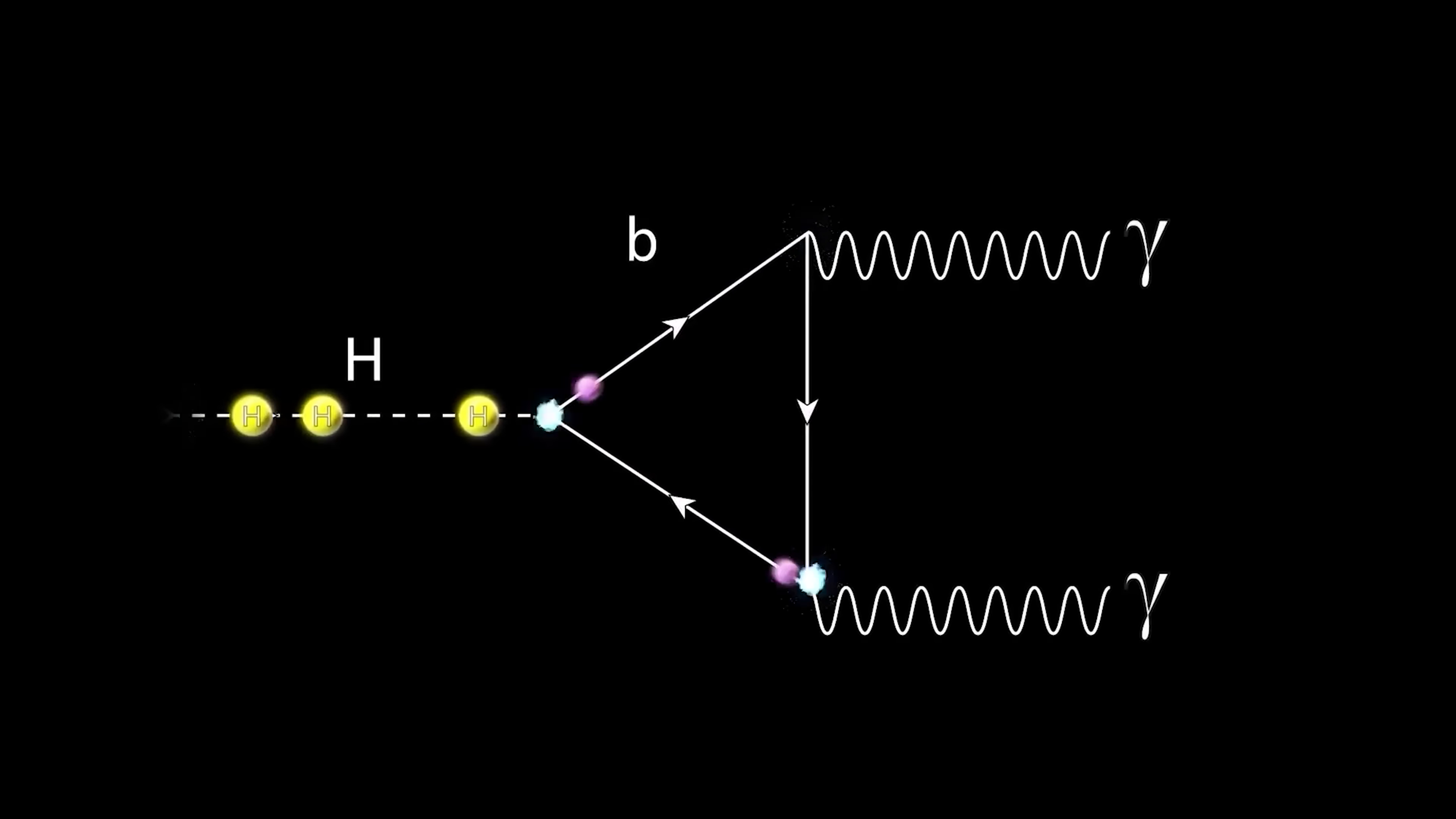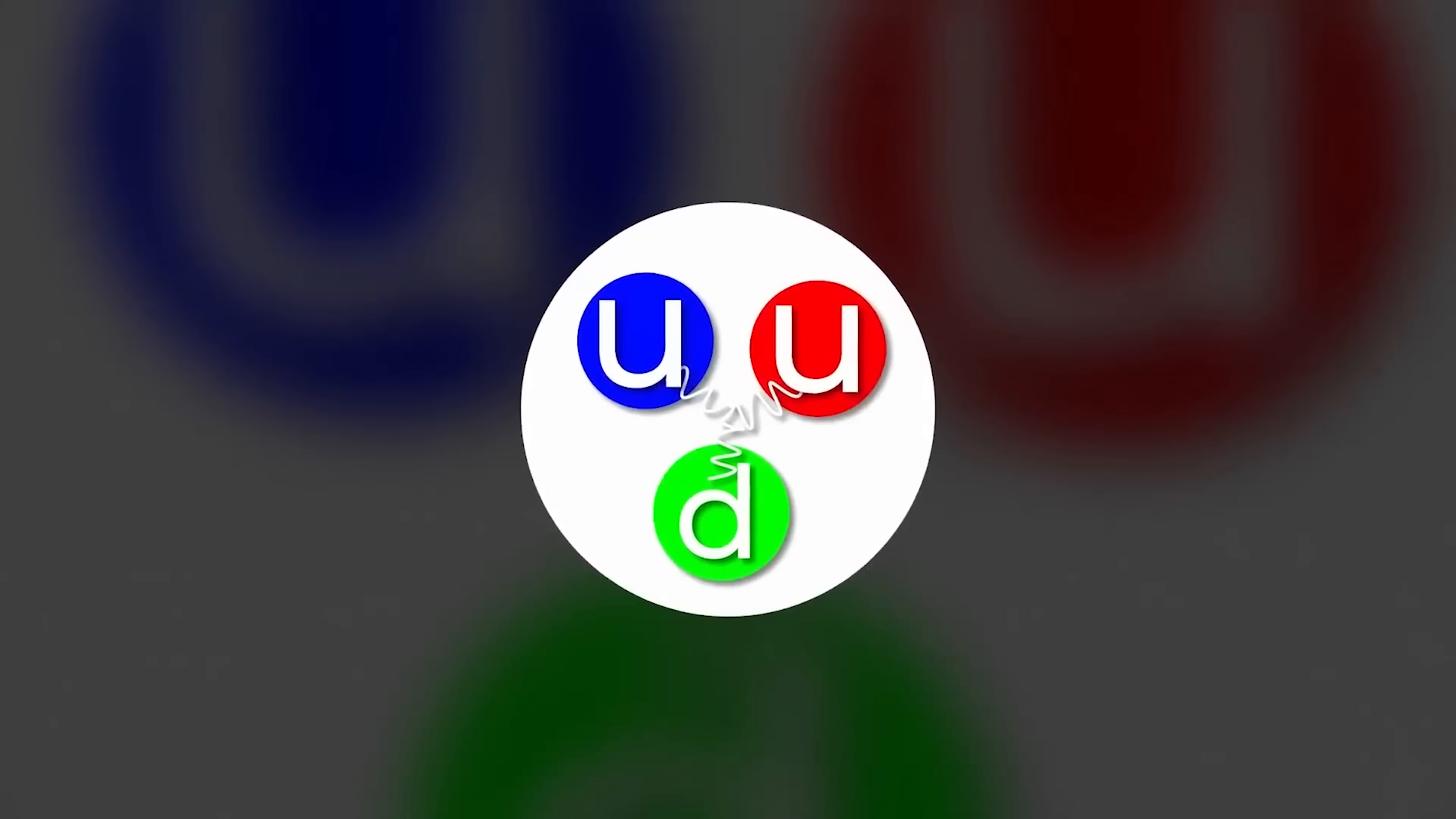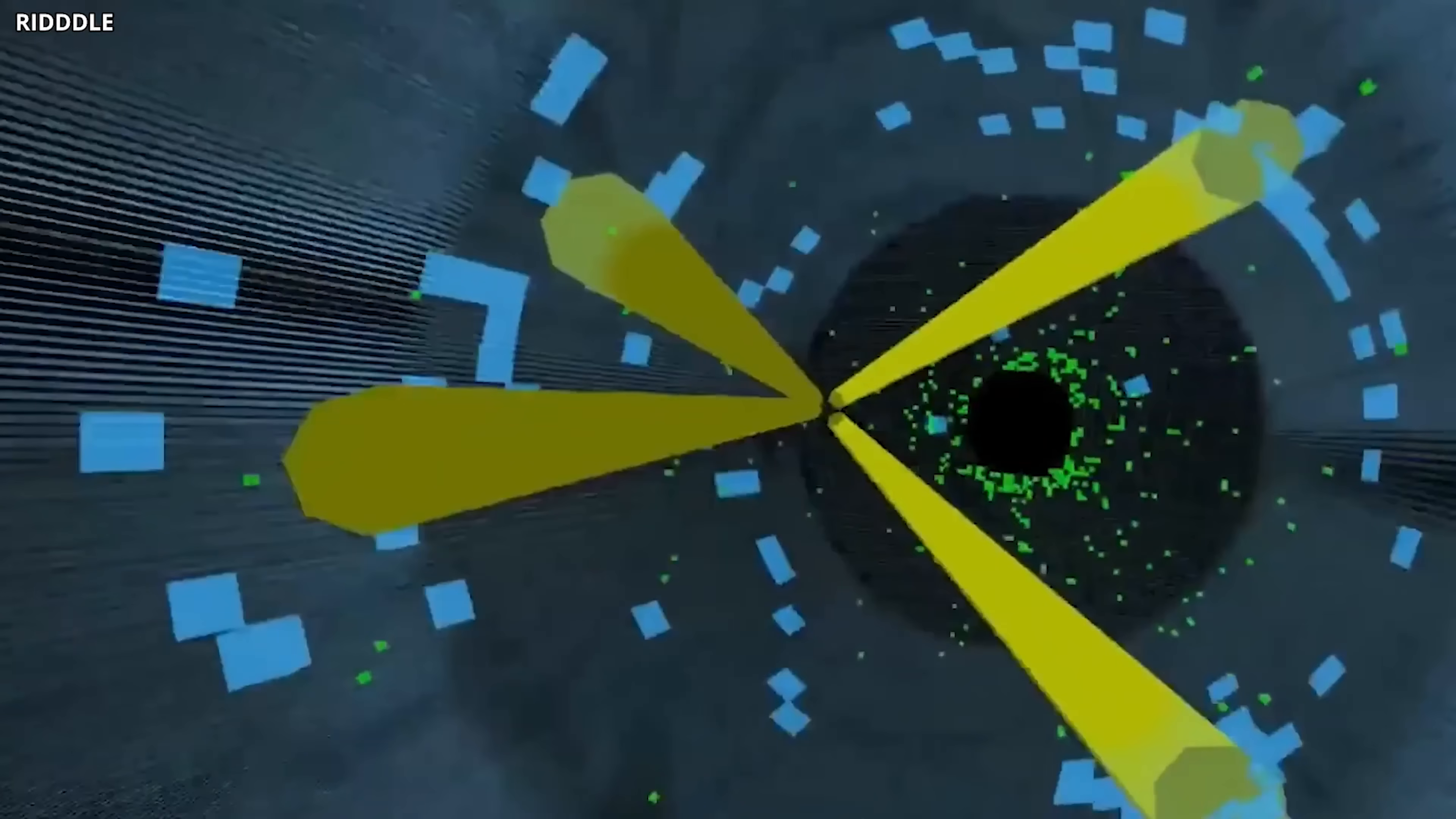This isn't a theory anymore. They watched it happen. Specifically, they saw the Lambda B0 baryon decay in a way that proved CP violation with incredible certainty.